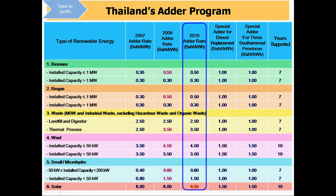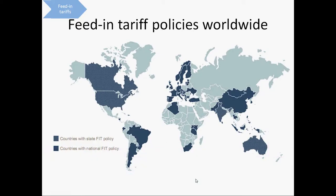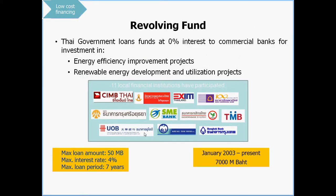Feed-in tariffs are widely used around the world, and here's a map showing where they are used. In addition to feed-in tariffs, Thailand also implemented a revolving loan fund. The Thai government loaned funds at 0% interest rate to commercial banks, and the commercial banks in turn loaned this money to project developers at a maximum interest rate of 4%, a maximum loan amount of 50 million baht, and a loan period of 7 years. These loans were specifically for energy efficiency improvement projects and renewable energy development projects.